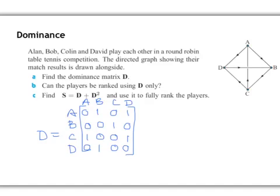Part B asks, can the players be ranked using only D? So what they're asking here is can we find a dominant player, and can we separate out the four players after just one step or one round? So let's add up our rows in this case to get our dominance. So our dominance would be given by A, B, C, and D. We add up our rows. We've got two wins for Alan, one for Bob, two for Colin, and one for David. So you can see at the moment, we actually can't rank the players yet. Alan and Colin are currently on two wins each, so they're equal leaders.